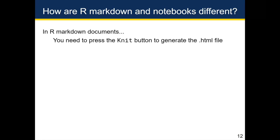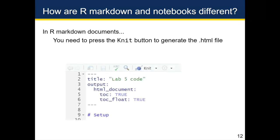As mentioned earlier, in an R Notebook your .nb.html file is constantly regenerated and updated when you run a chunk, save, or press preview. In an R Markdown document, you have to press the knit button to generate the .html file. When you convert an R Notebook into an R Markdown document, you'll notice the button above the editor that previously read 'Preview' will change to 'Knit' the moment you change the output from HTML notebook to HTML document in the header.